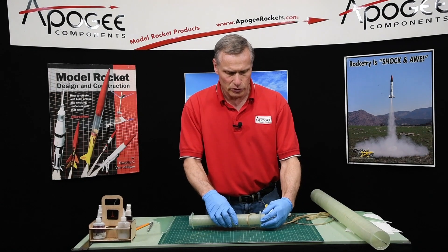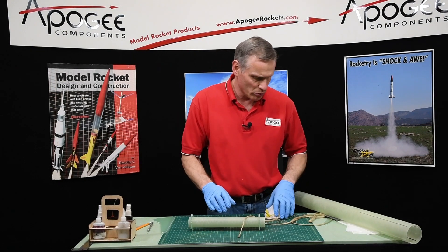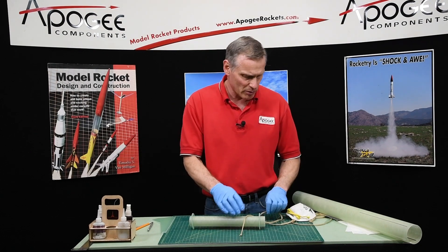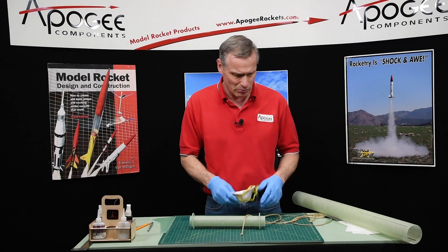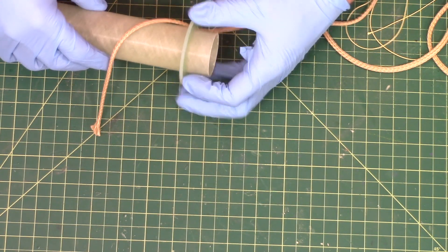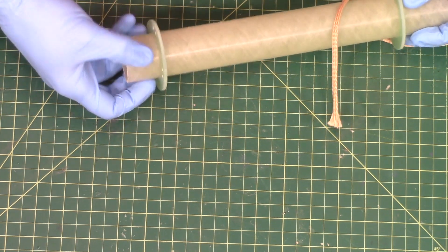But before we can glue these on, we need to scuff up the tube. The reason is because it's so slick, the fiberglass or the epoxy has a hard time bonding to it. So I'm going to put on my mask and then I'm just going to sand this area right here on the tube and that area right there on the tube.